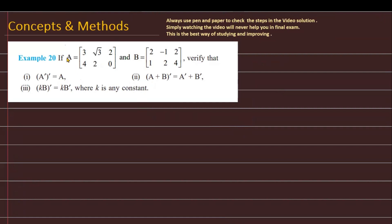The question is: if matrix A has first row entries 3, root 3, 2 and second row entries 4, 2, 0, and another matrix B has first row entries 2, minus 1, 2 and second row entries 1, 2, 4, then verify that: first, (A^T)^T = A; second, (A+B)^T = A^T + B^T; and third, (kB)^T = k·B^T where k is any constant.